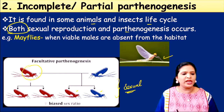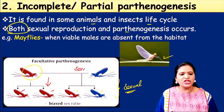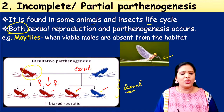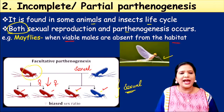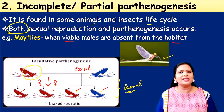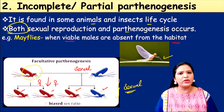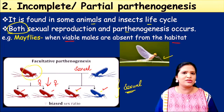In mayfly Parthenogenesis, the female produces only female flies. Why do they do this? Because when viable males are absent from the habitat — perhaps during a particular season when males vanish — only females are available. In such occasions, when males are not viable, females perform Parthenogenesis to continue reproduction.